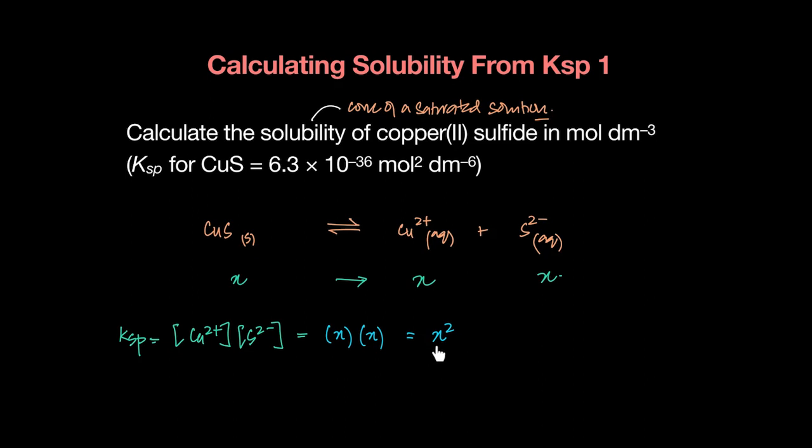But now we don't know the value for X, so we can just plug it in. But X² is equal to KSP. And we do know the value for KSP. So basically X² is equal to 6.3 times 10⁻³⁶.